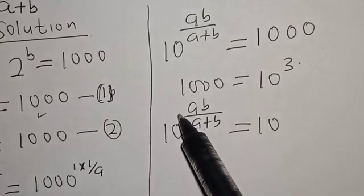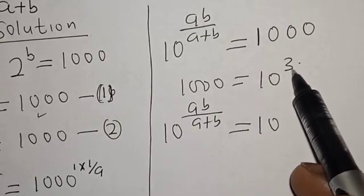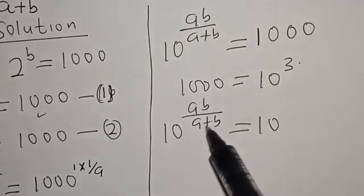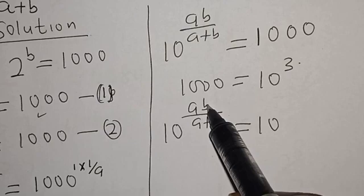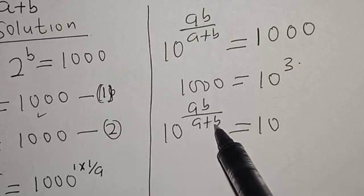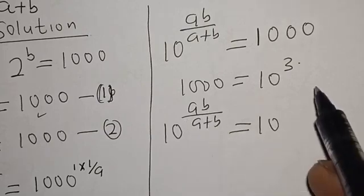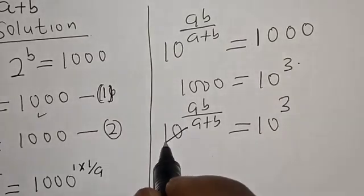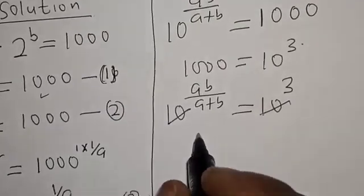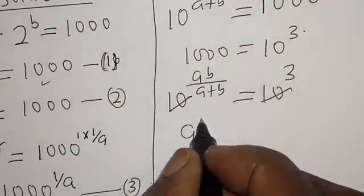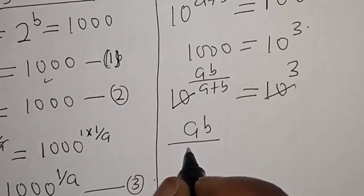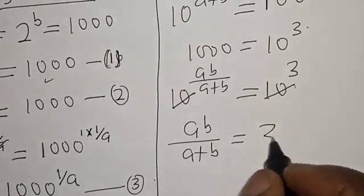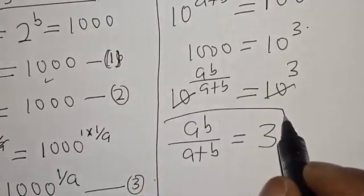Recall that 1000 is equal to 10 raised to power 3, since 10 times 10 times 10 equals 1000. Therefore we have 10 raised to power ab divided by a plus b is equal to 10 raised to power 3. Since they have the same base, the exponents are equal, so ab divided by a plus b is equal to 3. That is our final answer.